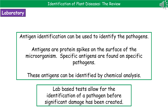The big advantage of both lab tests is that they allow for identification before significant damage has been created. We don't have to wait until the crop is showing all the signs and symptoms — such as discoloured leaves and deposits — to identify plant pathogen X. We can take a sample, run it through the lab before many signs and symptoms appear at all, and then take remedial action before too much damage is done.